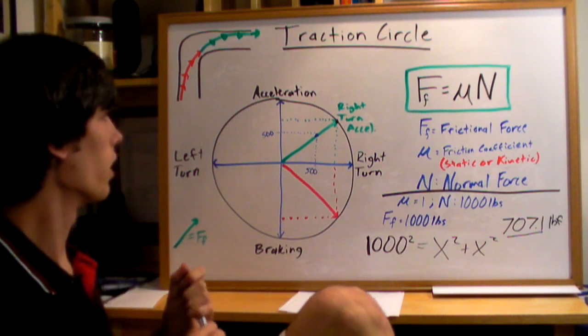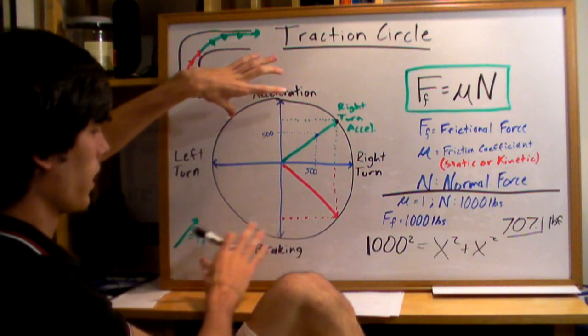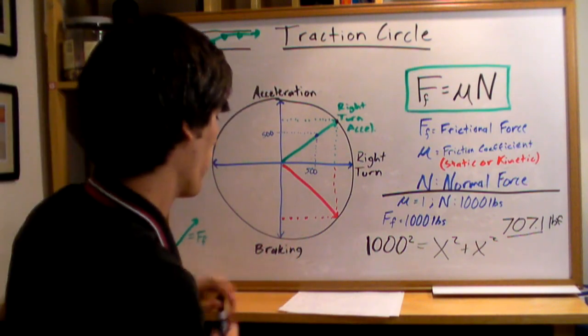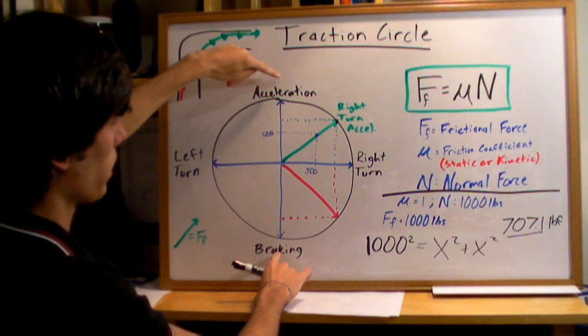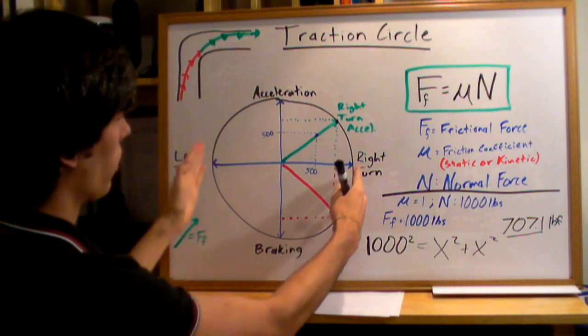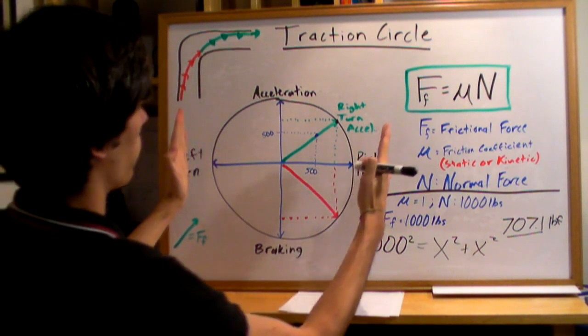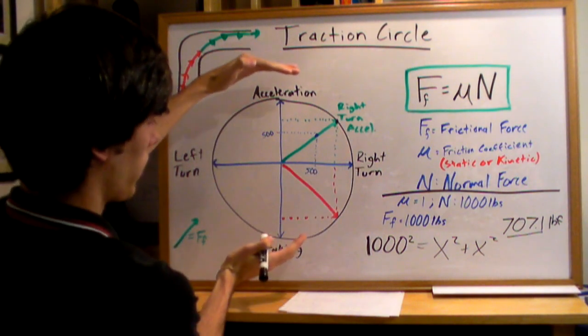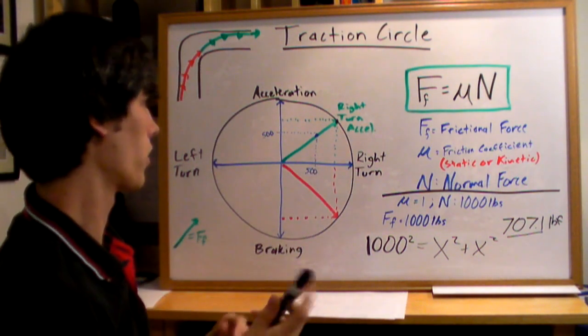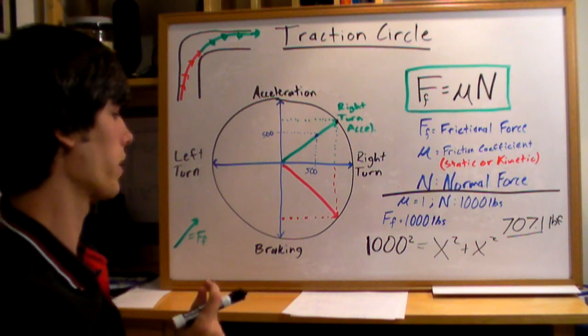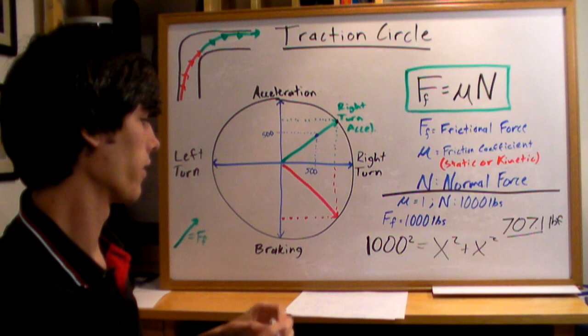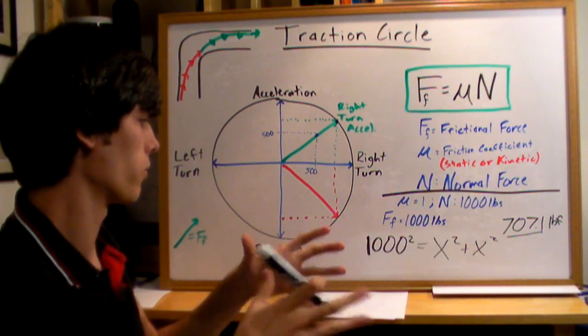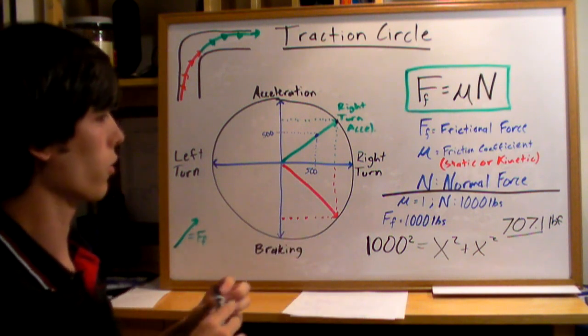Several things to note. First of all, this is actually more of an oval where you have more acceleration and braking force that you can use rather than turning force. So it's kind of squished a little here and extended here a little bit. Also, you're going to have more grip with wider tires. The weight's more evenly distributed, and there's less stress on the tires. They don't deform as much, so they're going to have better grip.